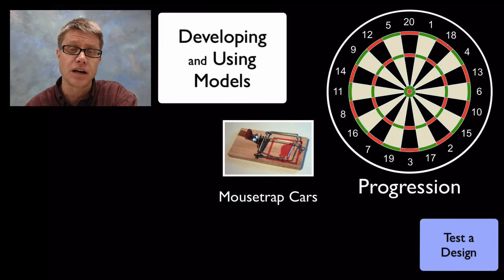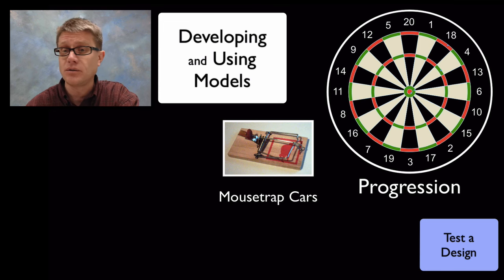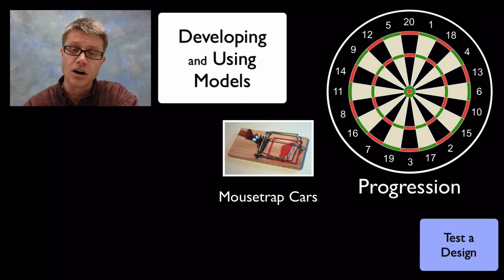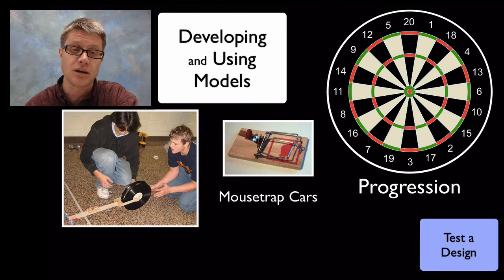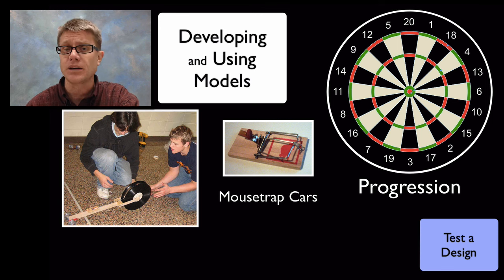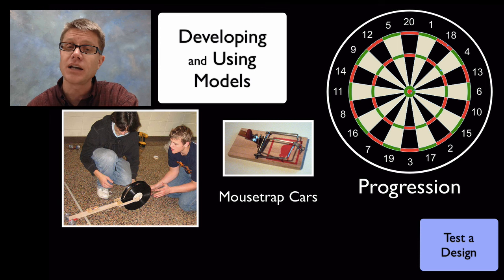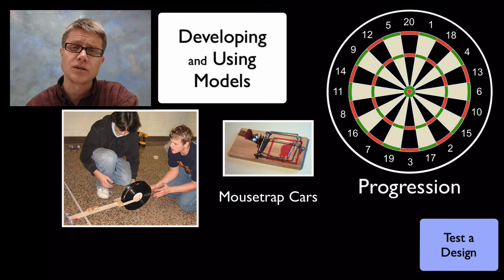Finally, we can test designs. The best way to understand the importance of testing designs is to actually do competitions. Mousetrap cars is something I've done before — basically you're creating a car that can move just through the power of a mousetrap. When you give students a question or problem like that with competition, they come up with ideas that are simply amazing. Not only are they building models, they're building physical models that they can test — they're really doing engineering and science, putting it all together. Models are really a physical manifestation of our mental models that we can all share, using them to explain phenomena and test designs. I hope that was helpful.